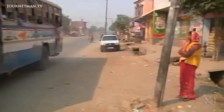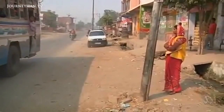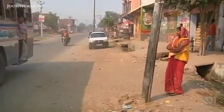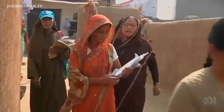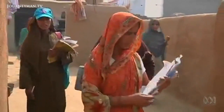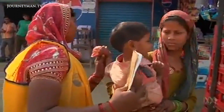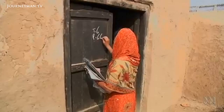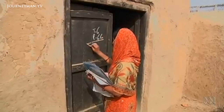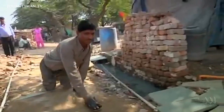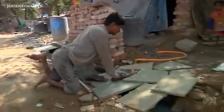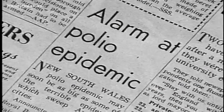Reported cases of wild polio have dropped from 350,000 in 1988 to just over 200 in 2012. Three countries remain endemic for wild poliovirus: Afghanistan, Nigeria, and Pakistan.